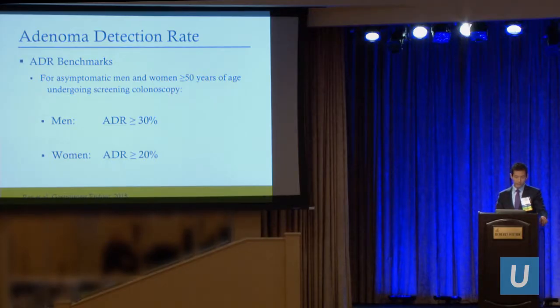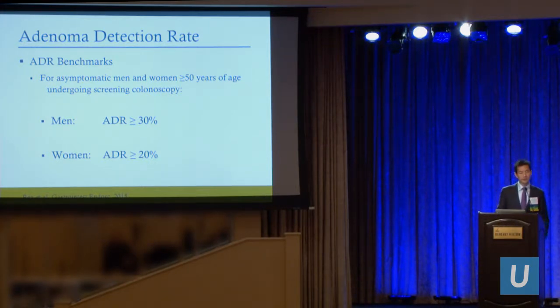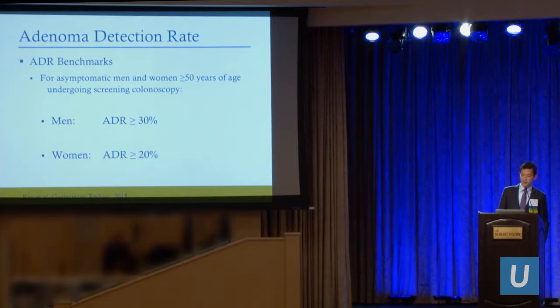More recently in 2015, the ACG and ASG Task Force on Quality decided to increase the benchmarks to 30% for men and 20% for women. So the current 2018 definition: asymptomatic men and women over age 50 undergoing screening colonoscopies should have an adenoma detection rate greater than 30% for men and 20% for women.